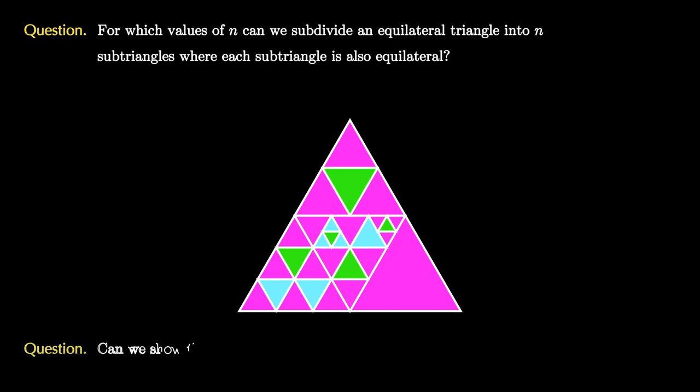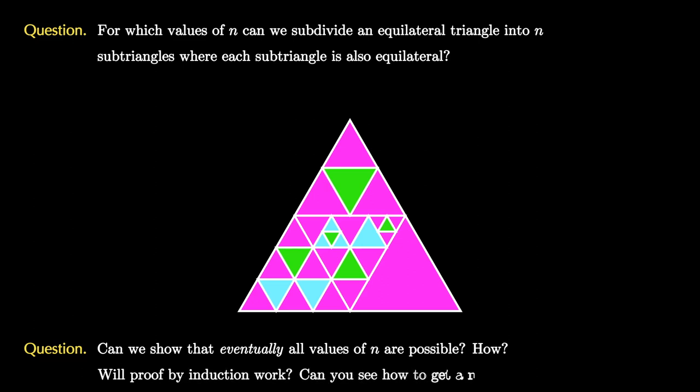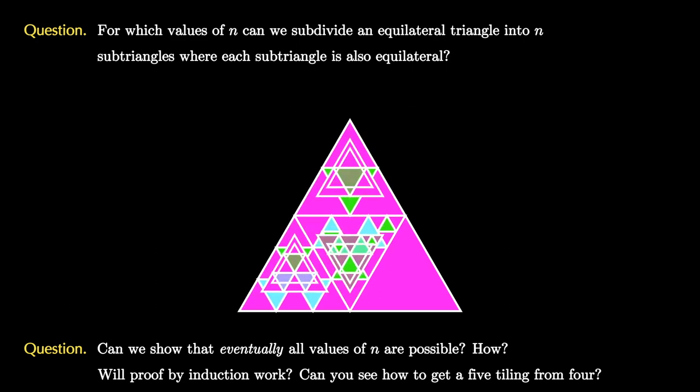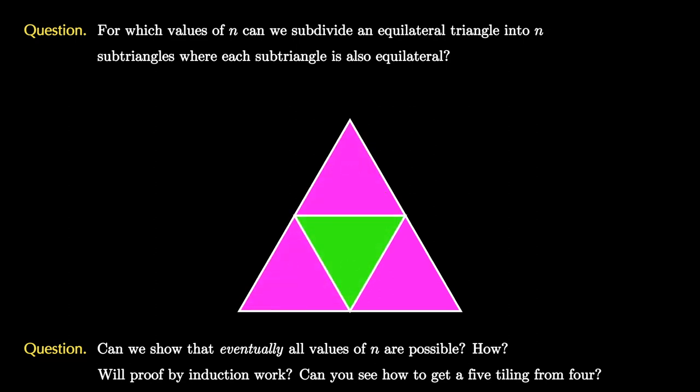Can we show that eventually all values of n are possible? How can we do this? Will proof by induction work? For instance, can you see how you could get a tiling of size 5 from this pictured tiling of size 4?